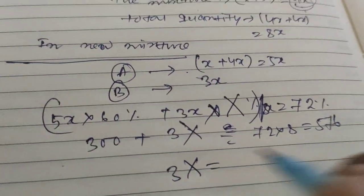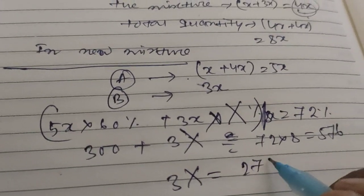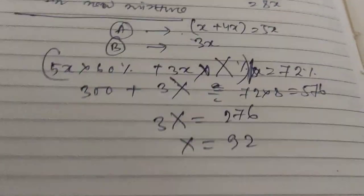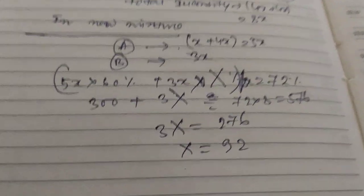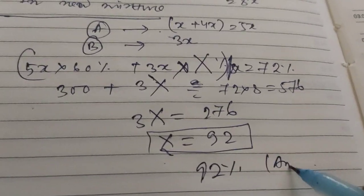Capital X equals 92. So the concentration of the alcohol in solution B is 92%, which is the answer.